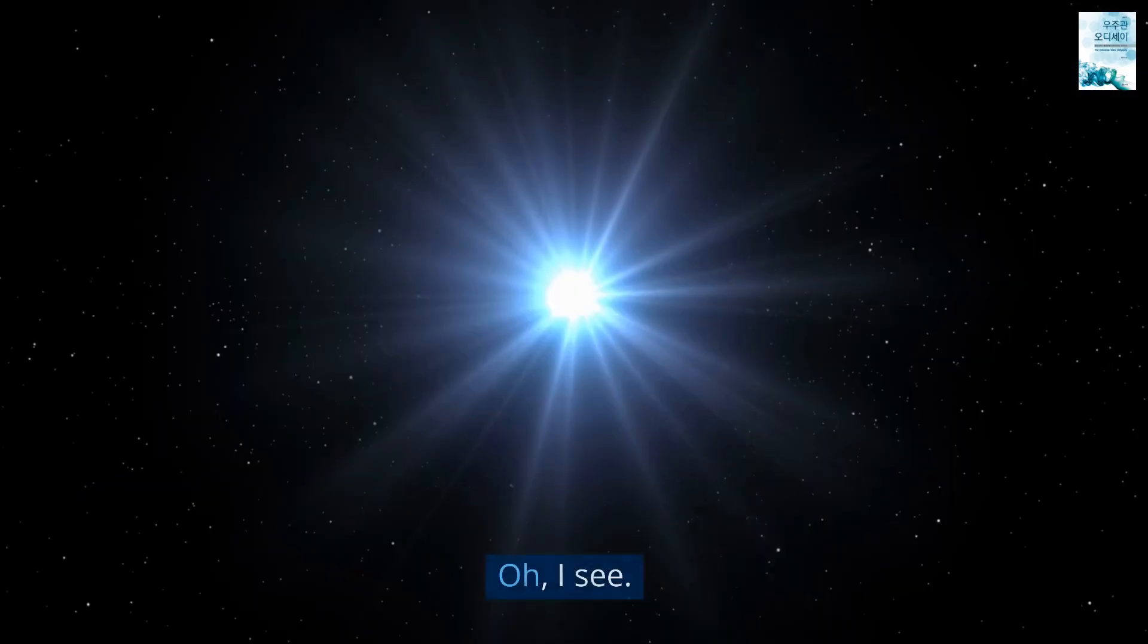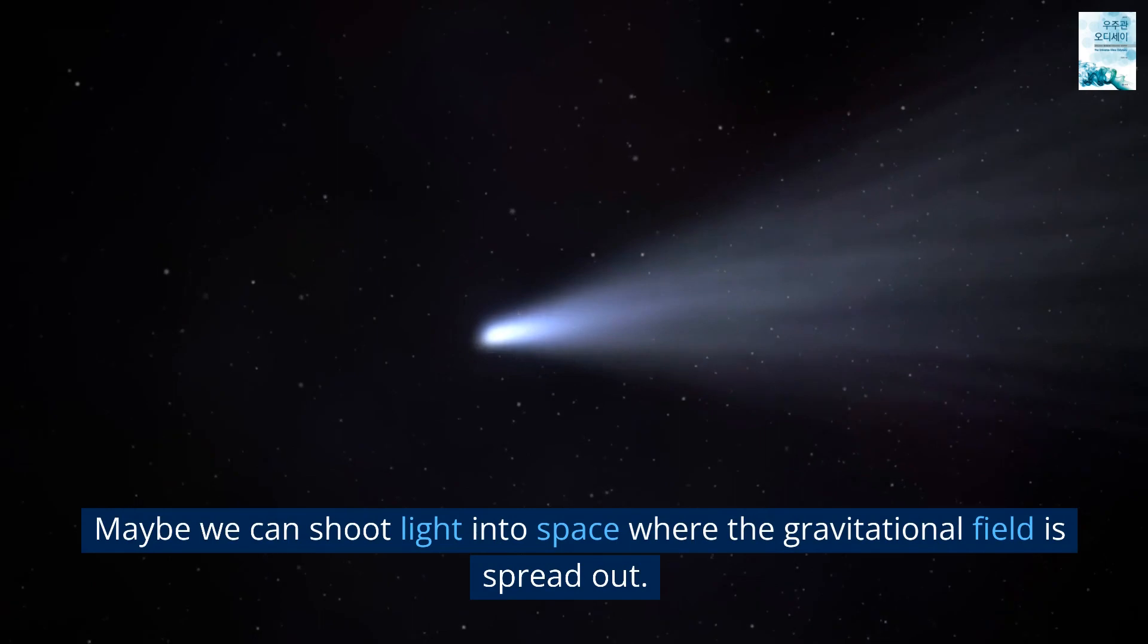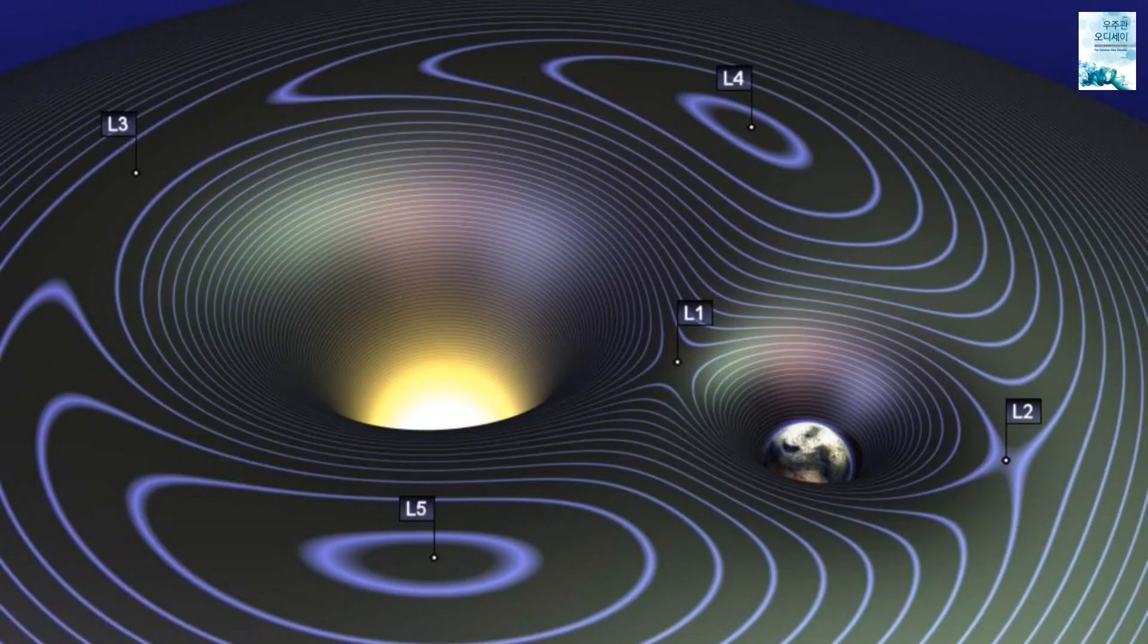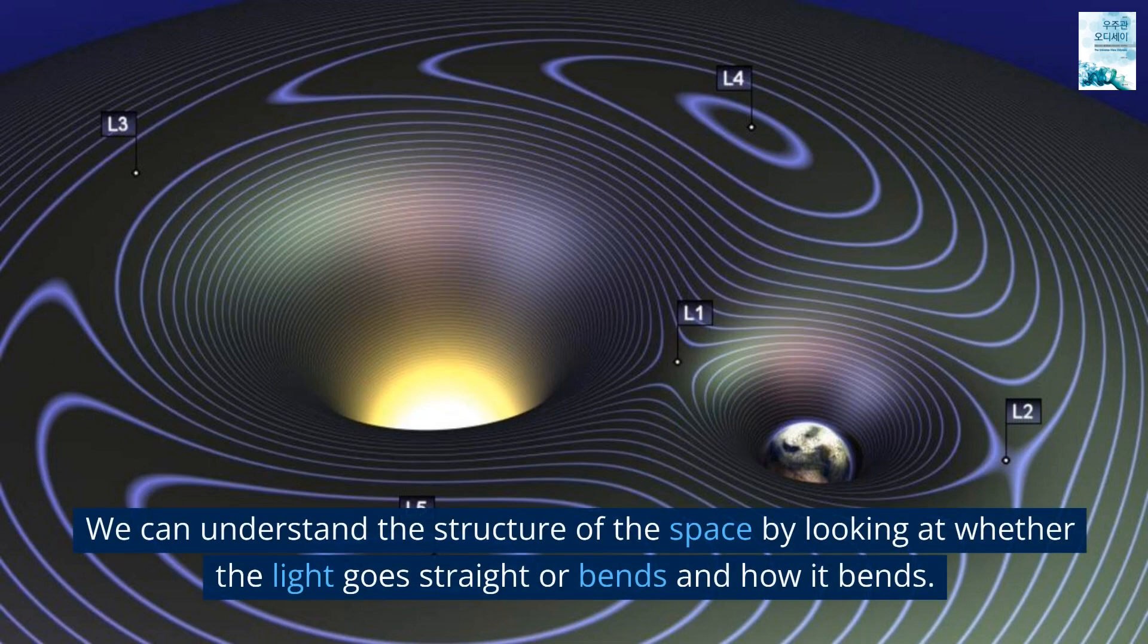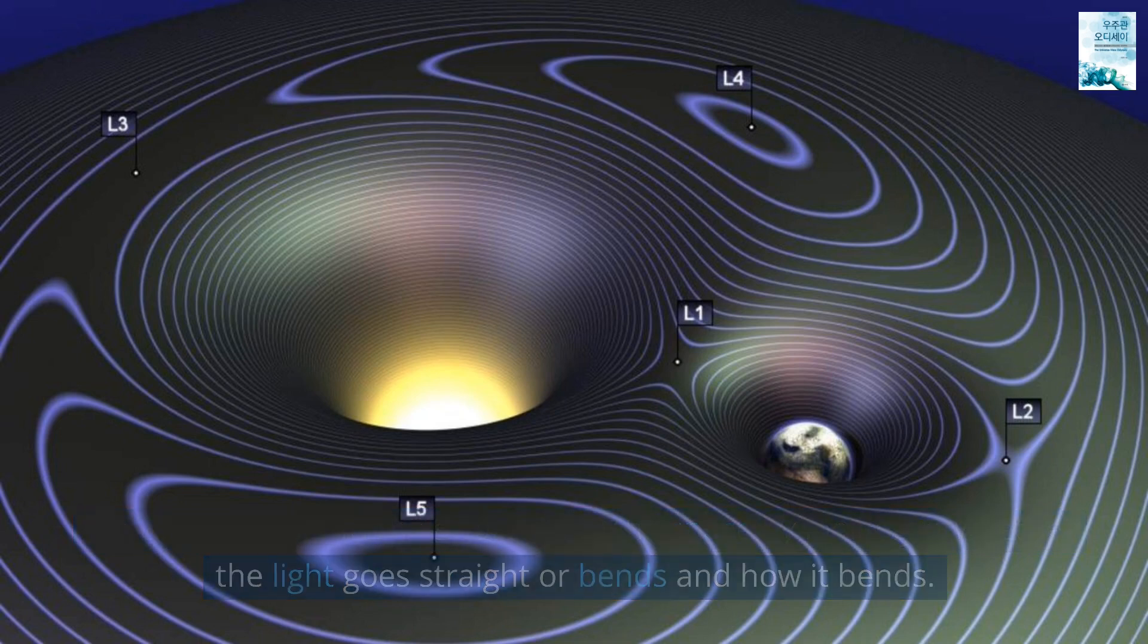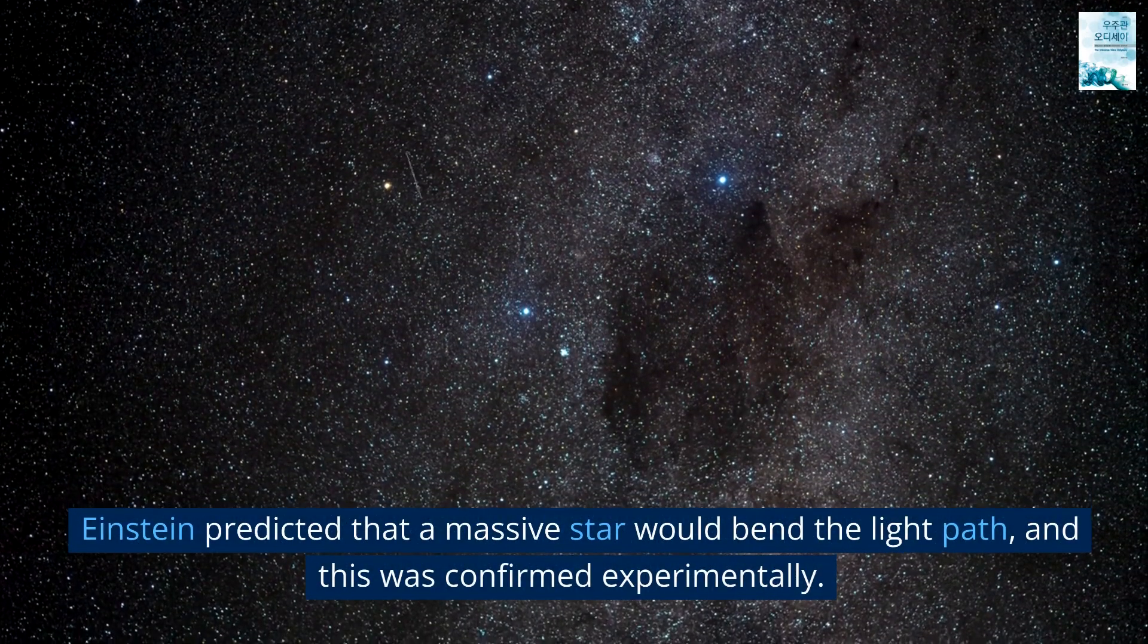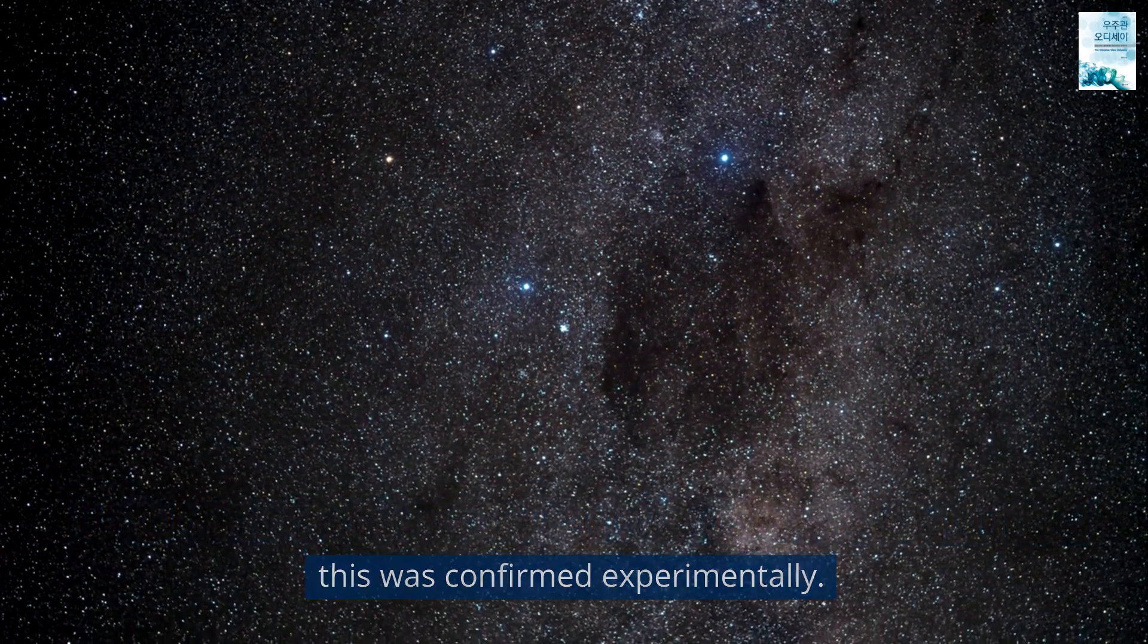Oh, I see. Maybe we can shoot light into space where the gravitational field is spread out. We can understand the structure of the space by looking at whether the light goes straight or bends and how it bends. Exactly. Einstein predicted that a massive star would bend the light path, and this was confirmed experimentally.